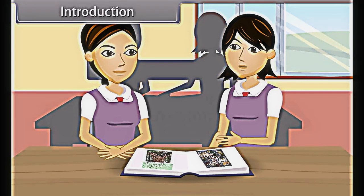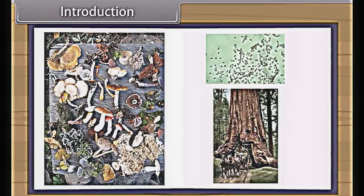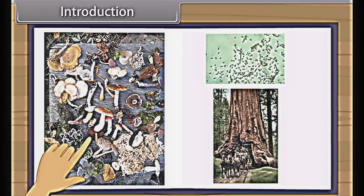We all see a wide variety of plants and animals around us. There are more than 1 million species of animals around the whole earth and about half a million species of plants on earth.